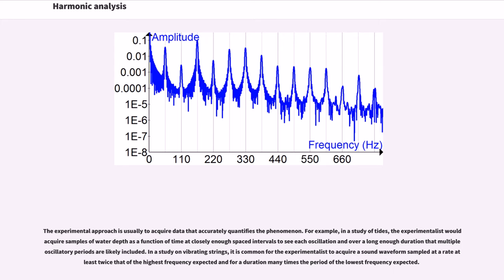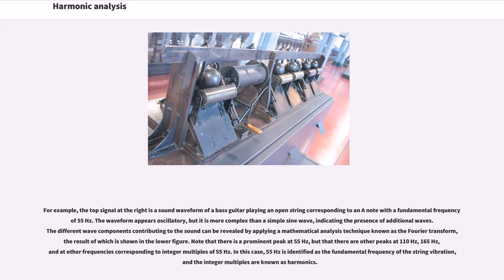For example, the top signal at the right is a sound waveform of a bass guitar playing an open string corresponding to an A note with a fundamental frequency of 55 Hz. The waveform appears oscillatory, but it is more complex than a simple sine wave, indicating the presence of additional waves.